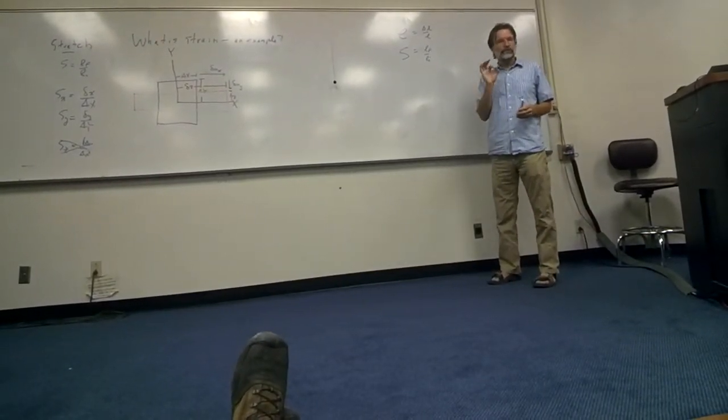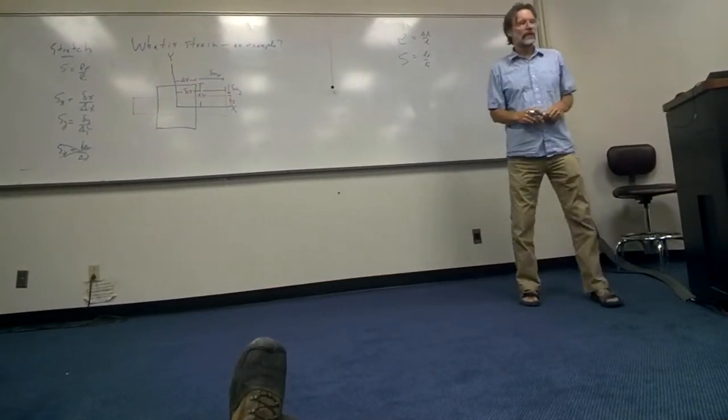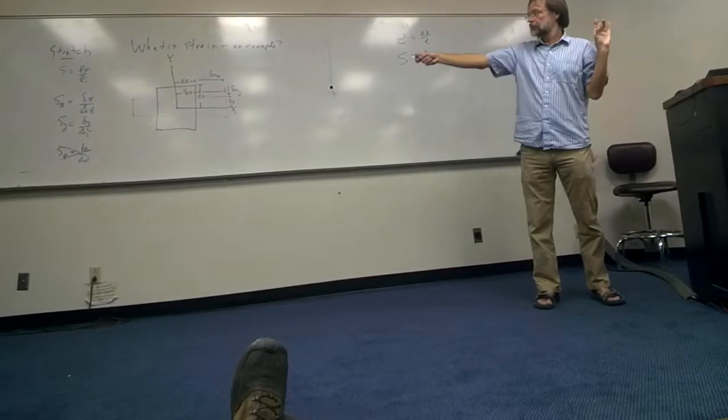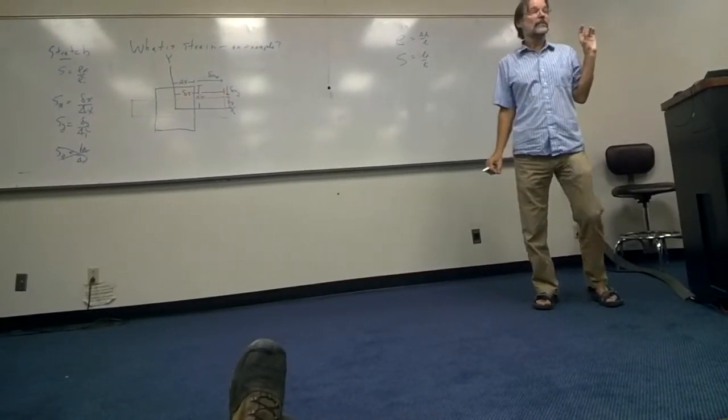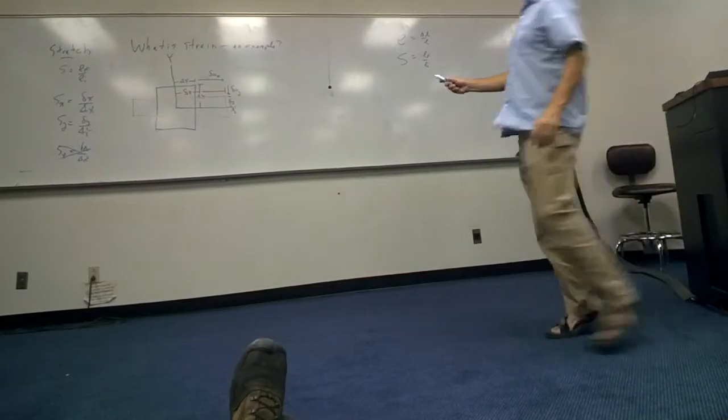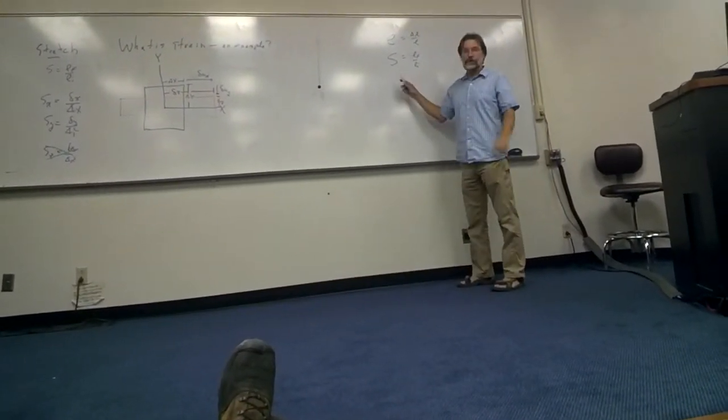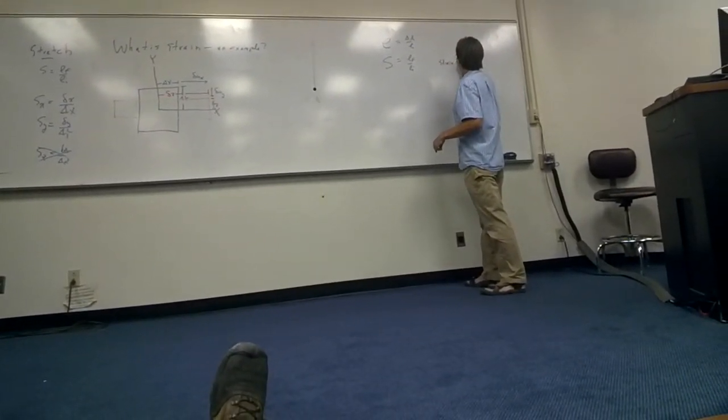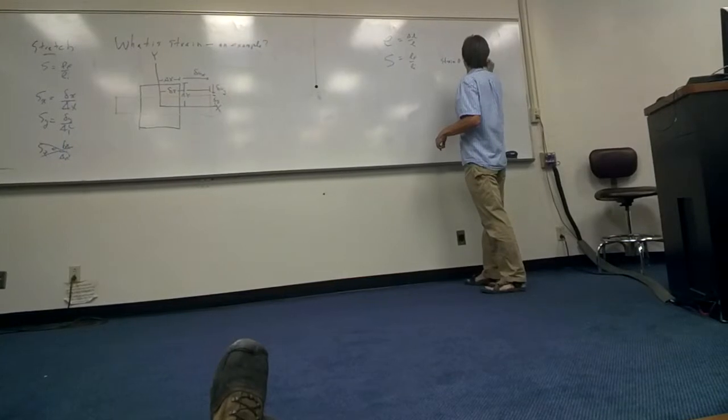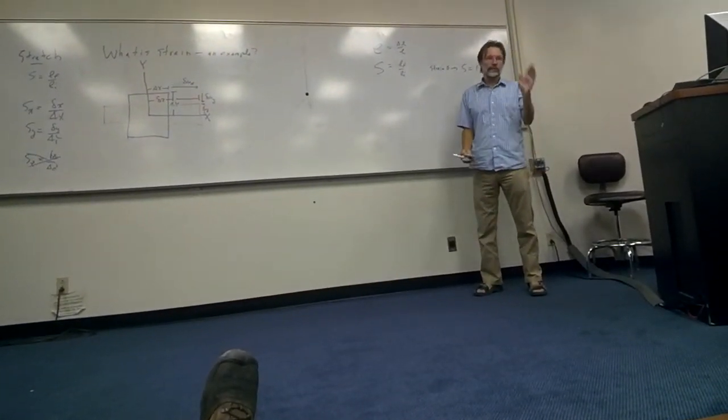What is zero strain in this quantity? No strain. What would the value of this quantity be? One. When strain is zero, S equals one. It's not intuitive, right? But there's a reason for that.